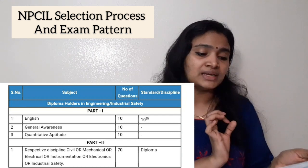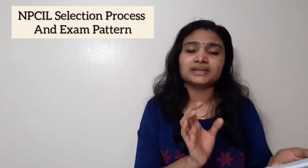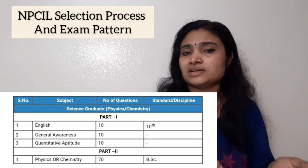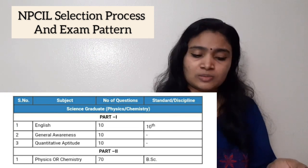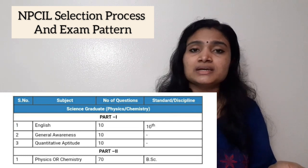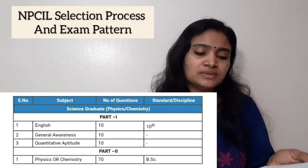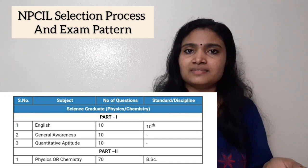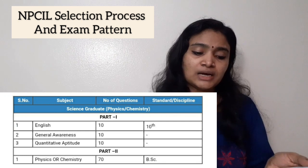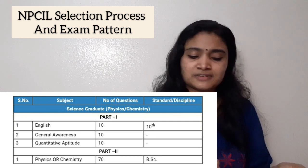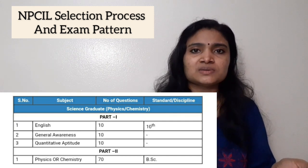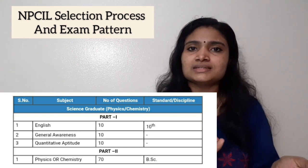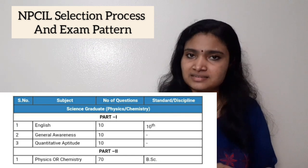Next, for the stipendiary trainee science graduate, the written exam pattern is similar. Again there are two parts. Part 1 consists of English, general awareness, and quantitative aptitude — 10 questions each, totaling 30 questions — and these are also at a 10th class standard. Part 2 will have questions from your BSc subject. They have called science graduates from physics and chemistry, so physics candidates face questions from physics and chemistry candidates from chemistry. There are 70 questions at BSc syllabus standard.